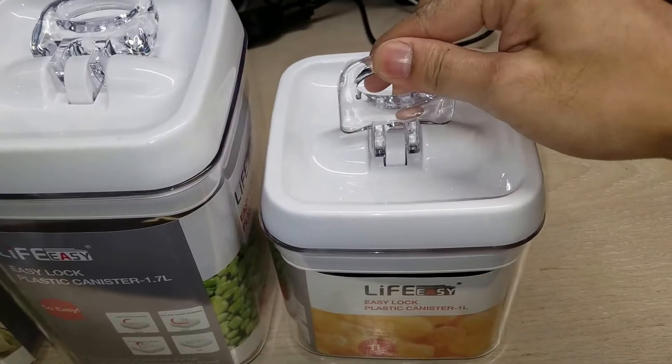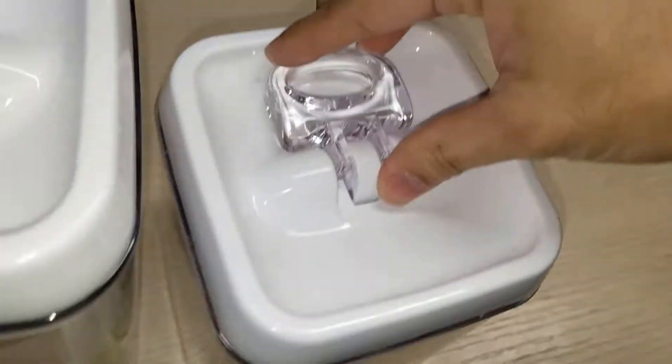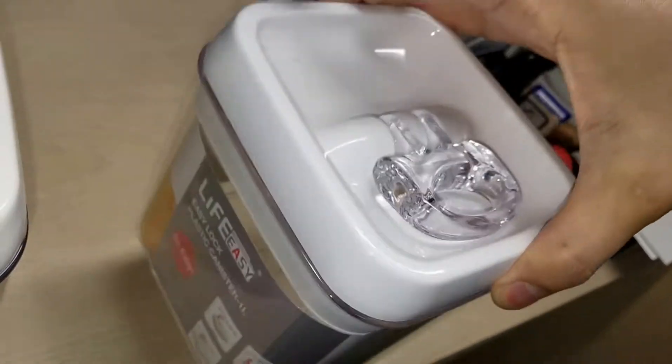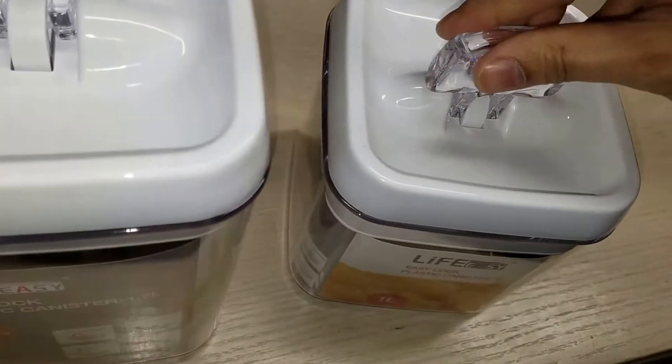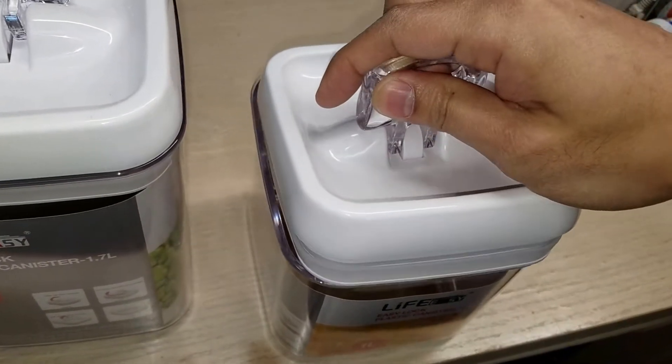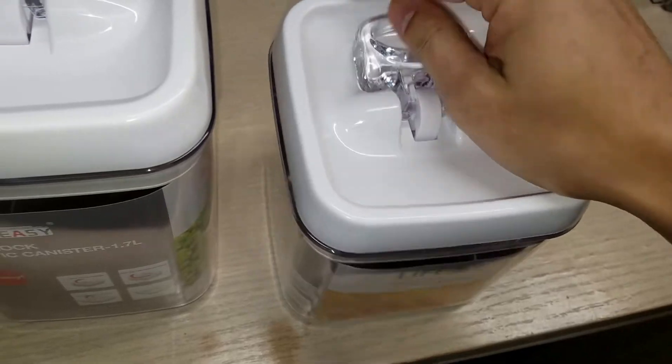The way this works is you push the handle down to lock it. When it's locked, you can see it's snug in. If you put it up, it's actually loose enough to just fall out. Therefore, it's pretty easy to open and close.